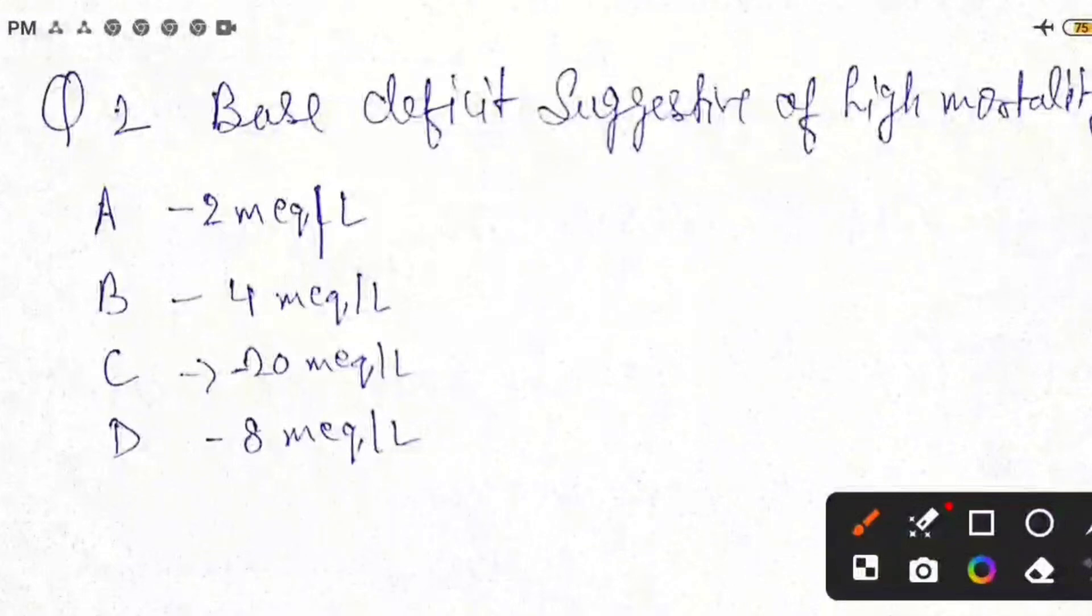What is the single best answer? Base deficit suggestive of high mortality. Answer is minus 20. If the minus number increases, that means the patient is in shock. What type of shock is it? Grade 4.